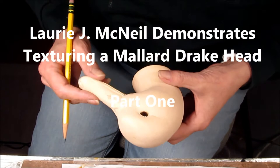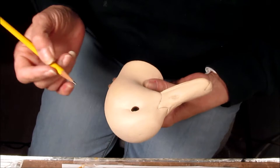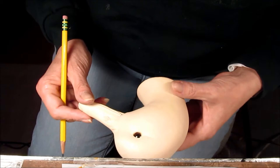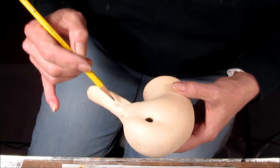This demonstration is going to show a mallard drake head that will be stoned in with texture and not with burning. I'm at the point where all the detail that will be needed on this head has been added with the exception of the nostril holes.